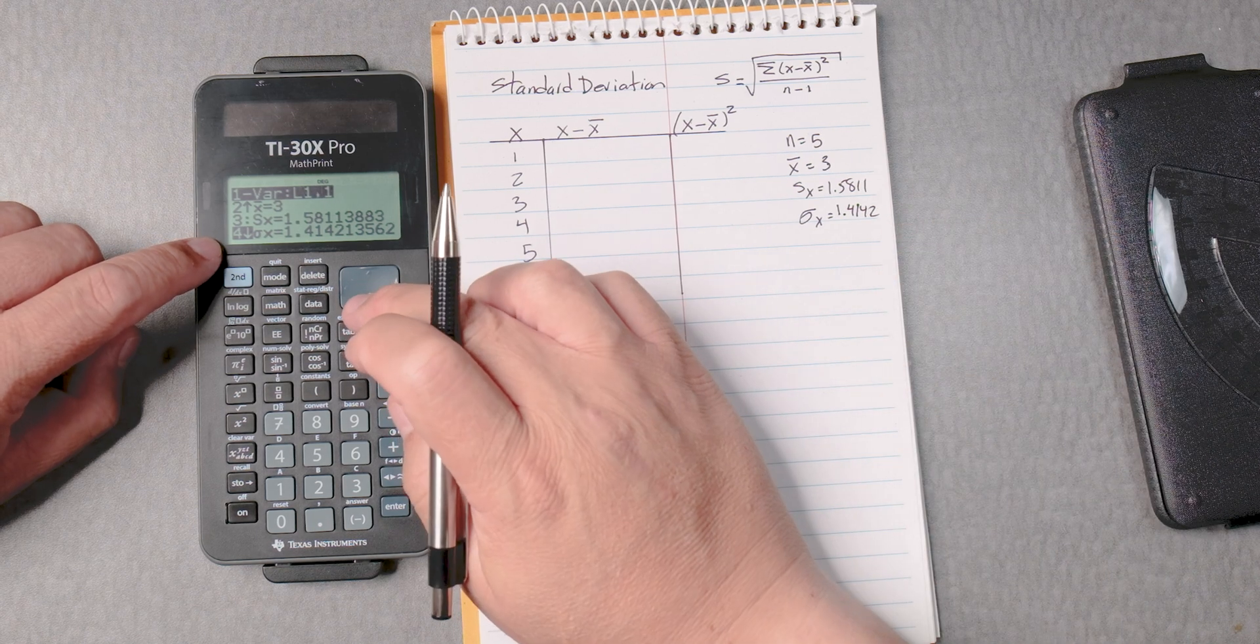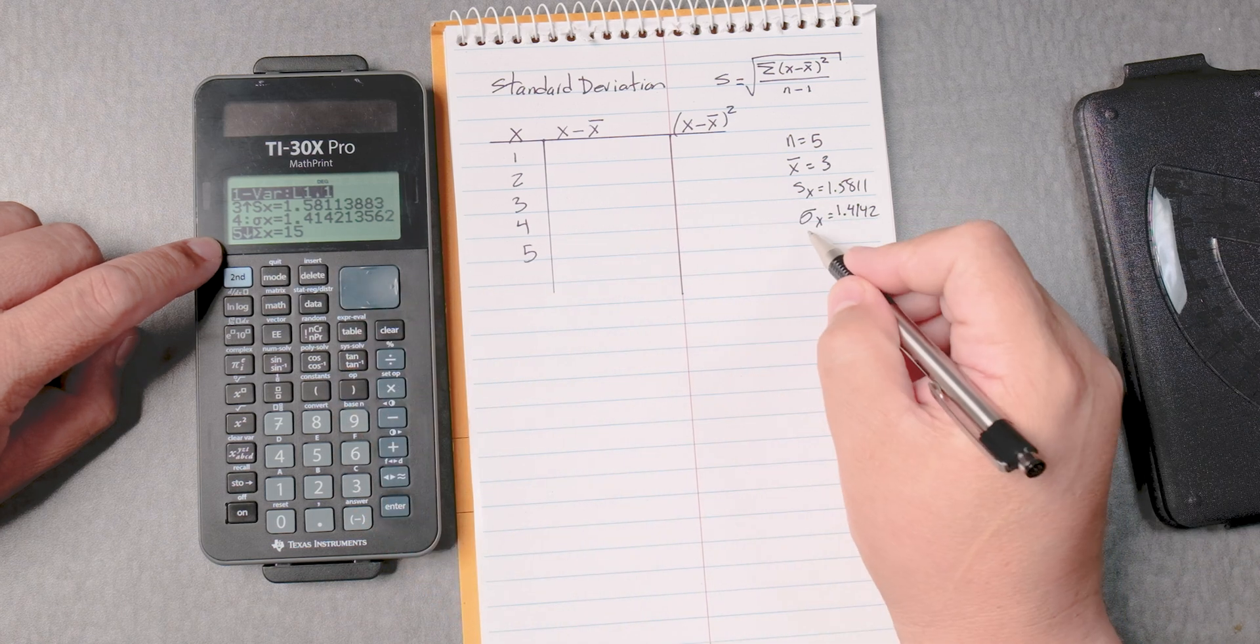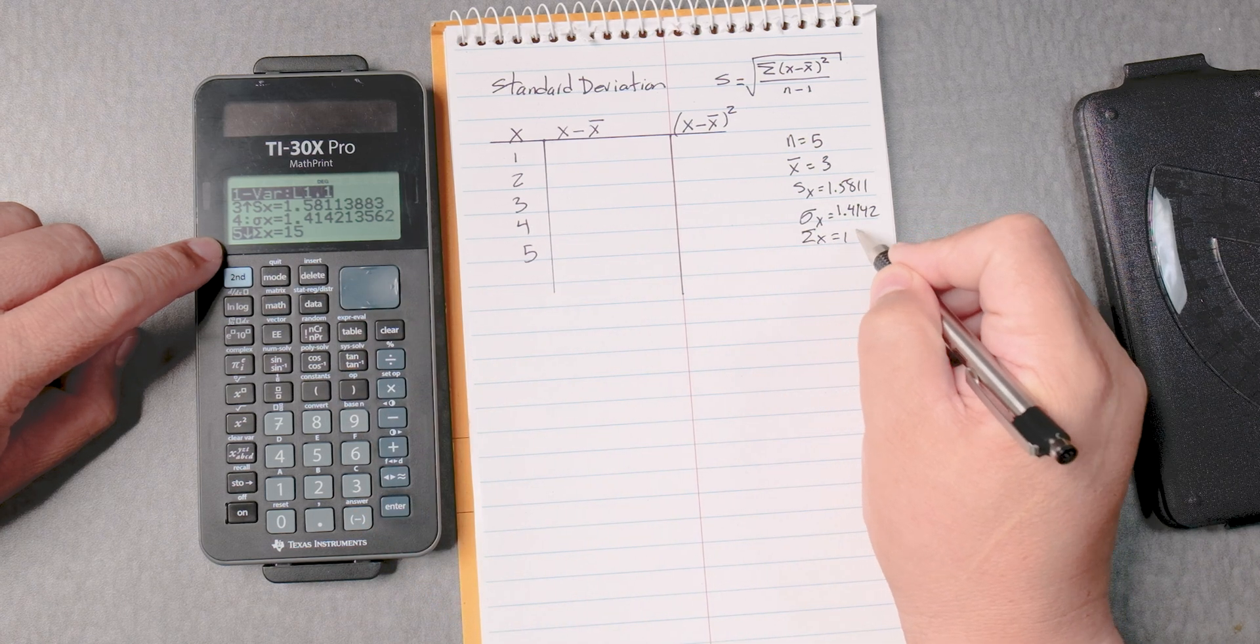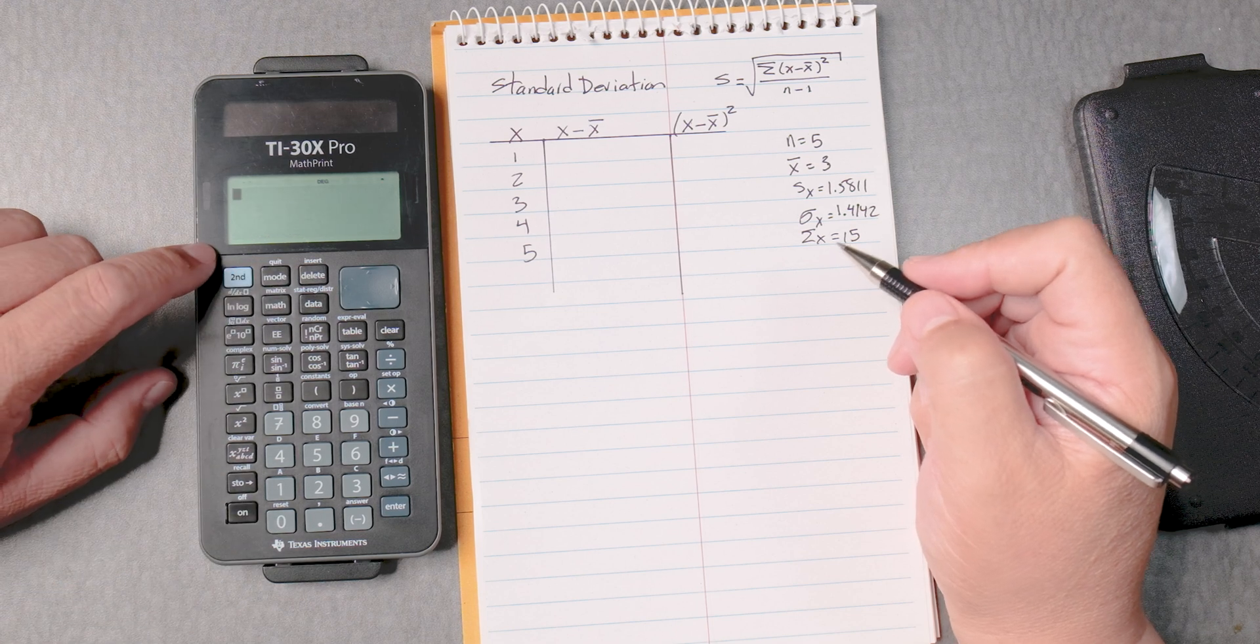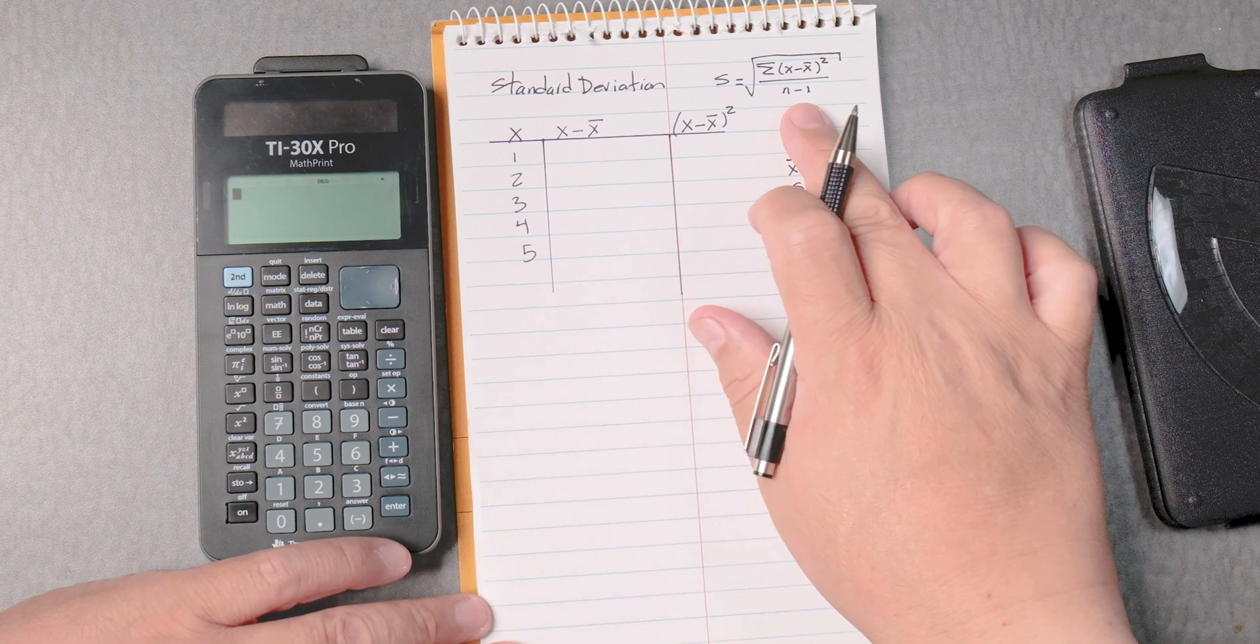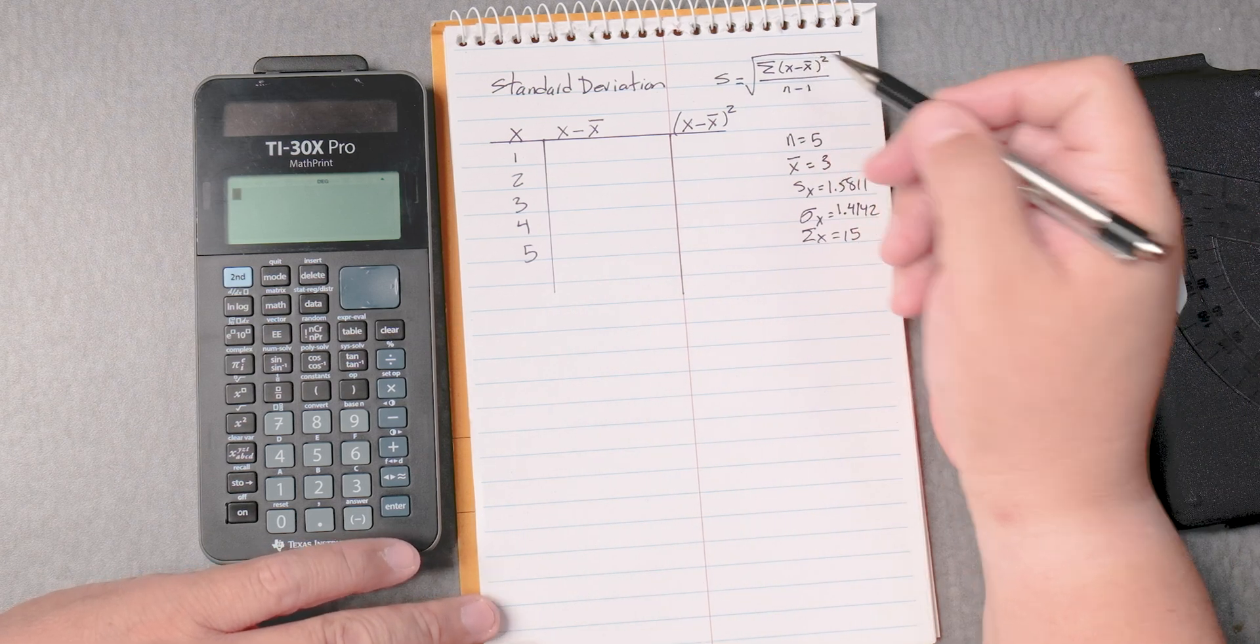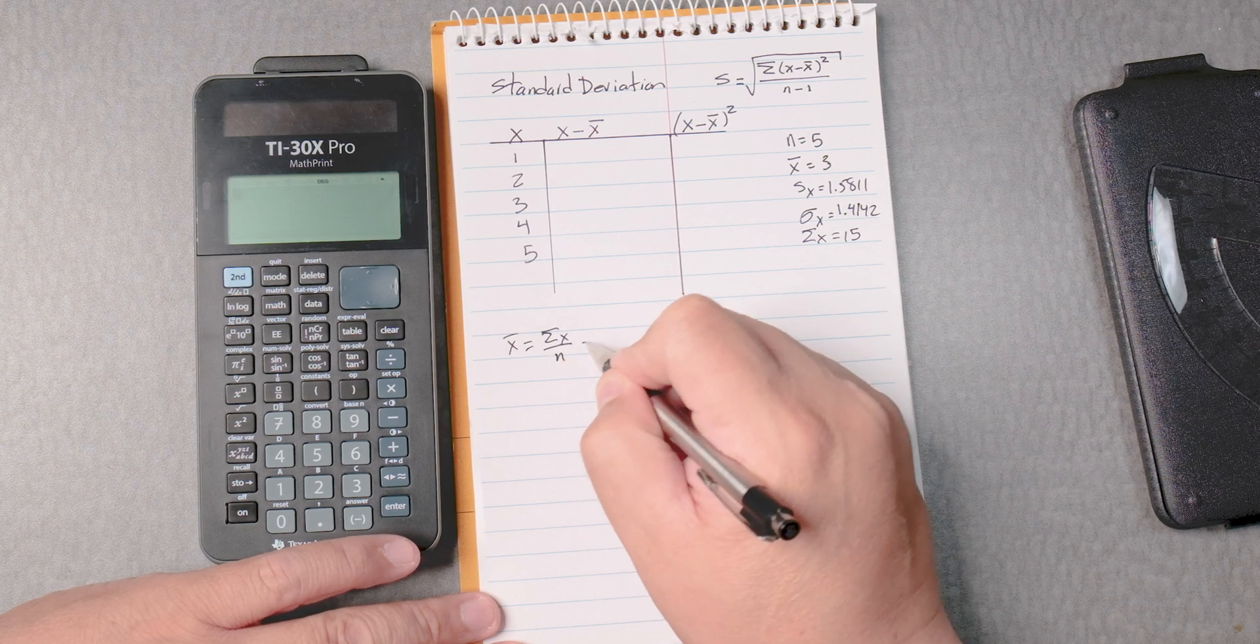And now that could be it. If you scroll down, it gives you the sum of x as well, the sum of x, we'll talk about that as well. So let's second quit, and we're doing this by hand. And we need to find the mean because the formula has the mean. So the mean is going to be the sum of x divided by n.